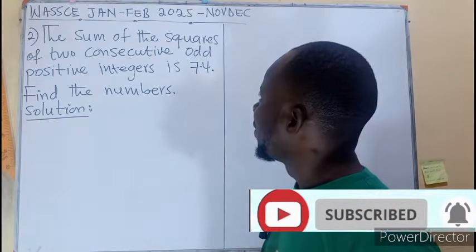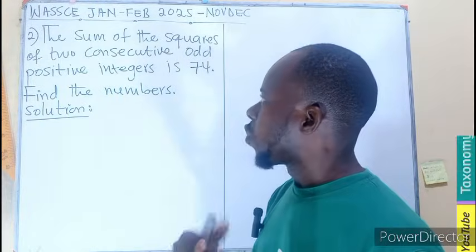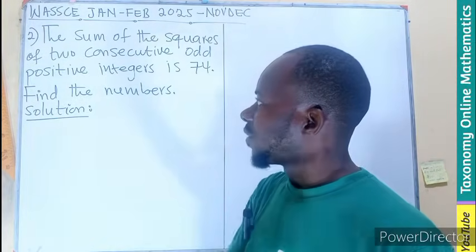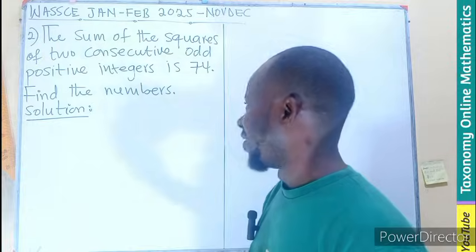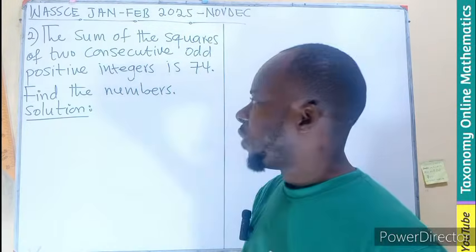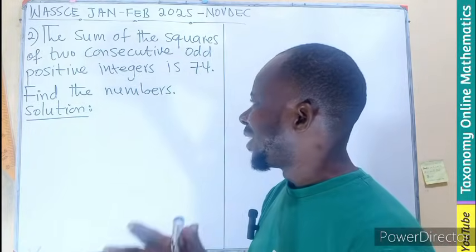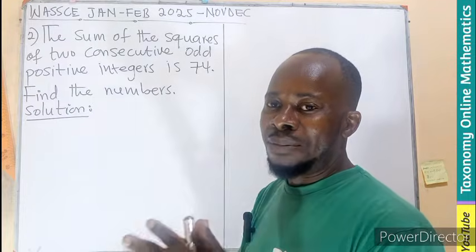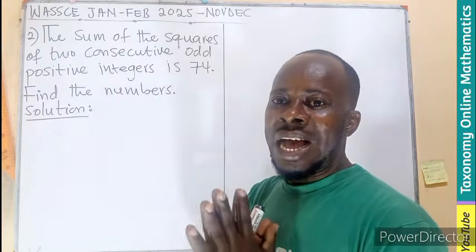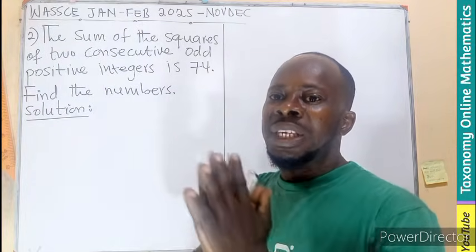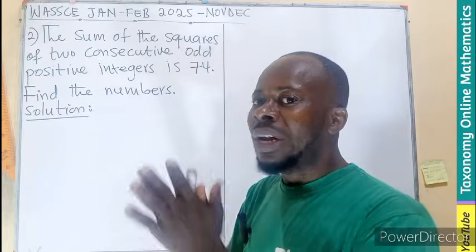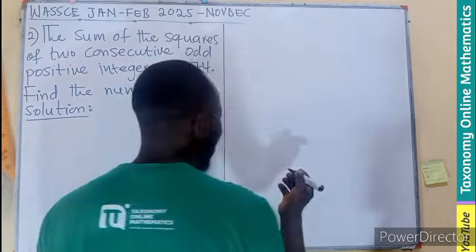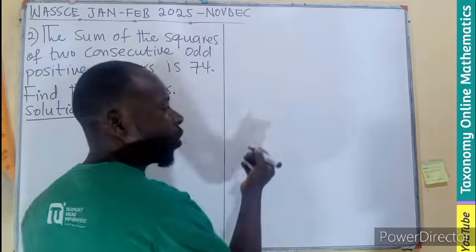The sum of the squares of two consecutive odd positive integers is 74. We have to find those numbers. Remember, odd numbers are numbers that are not divisible by two without leaving a remainder. So let's see if we can think of those odd numbers.